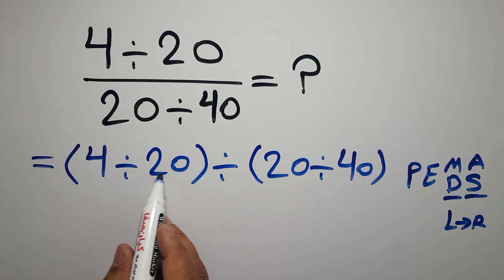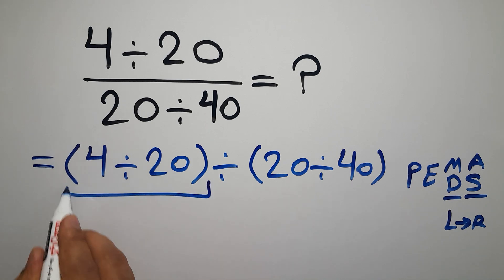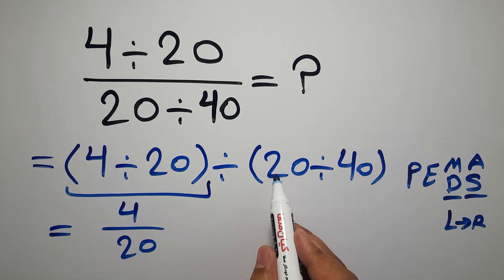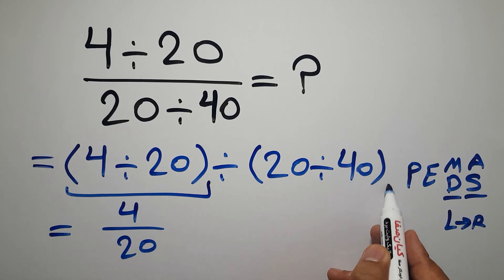4 divided by 20 can be written as 4 over 20. And here we have 20 divided by 40.